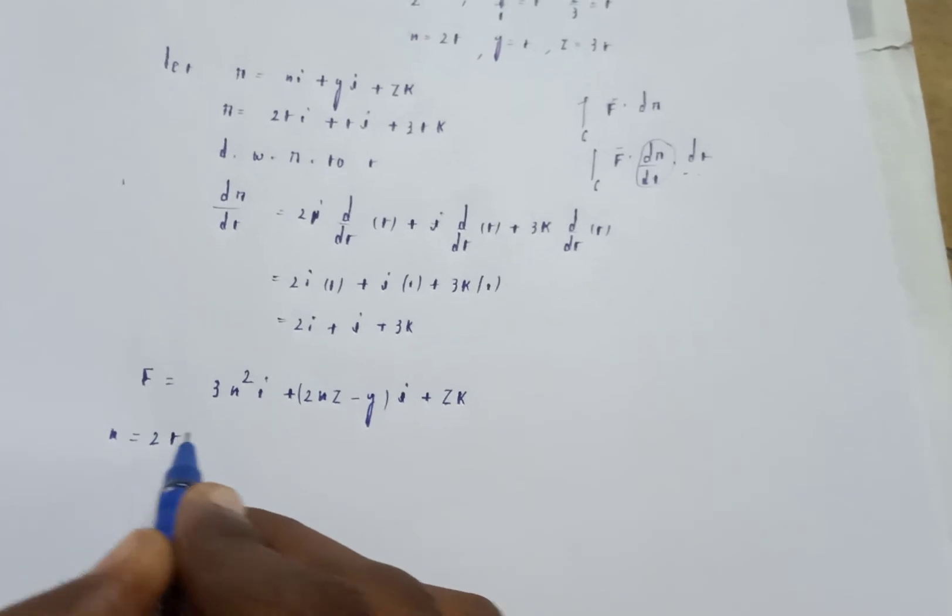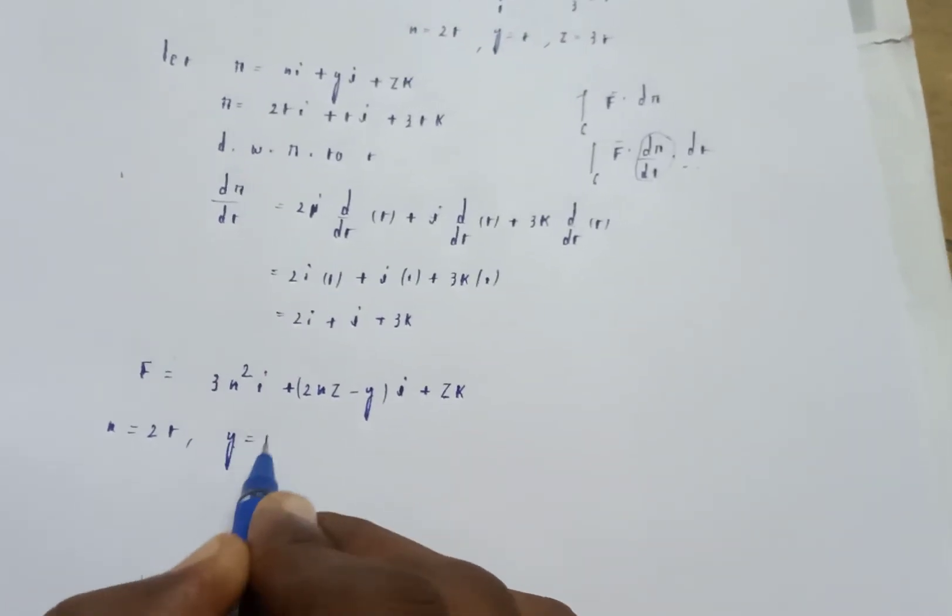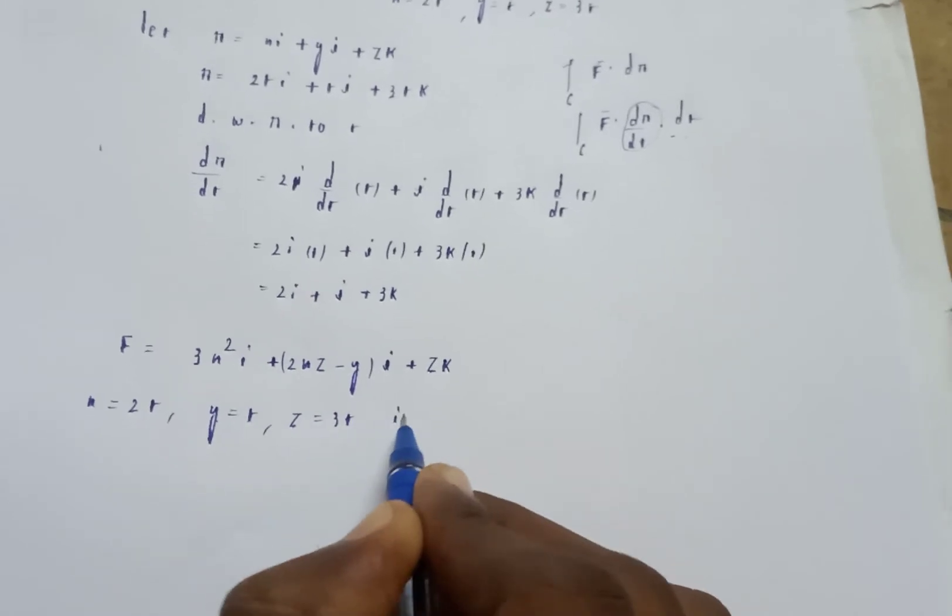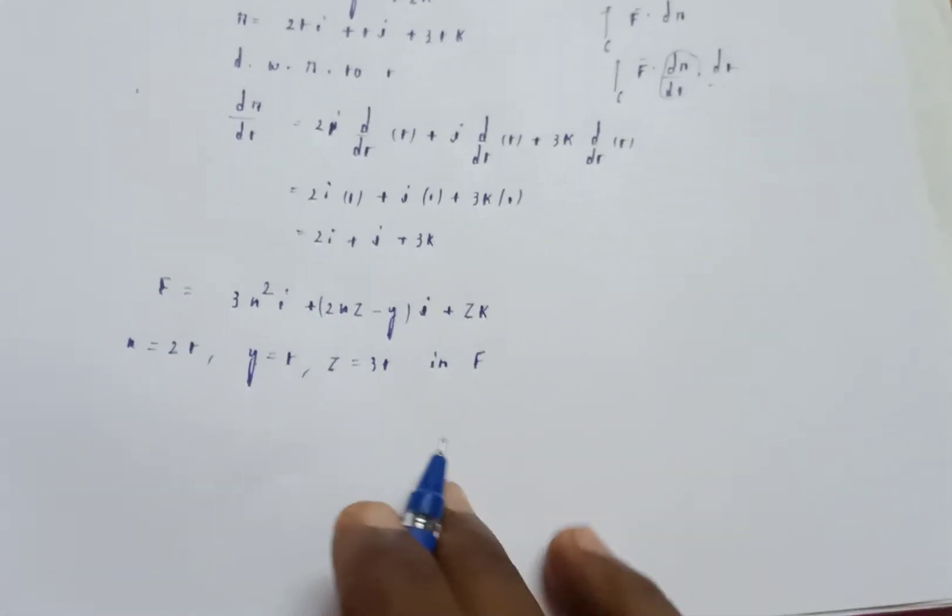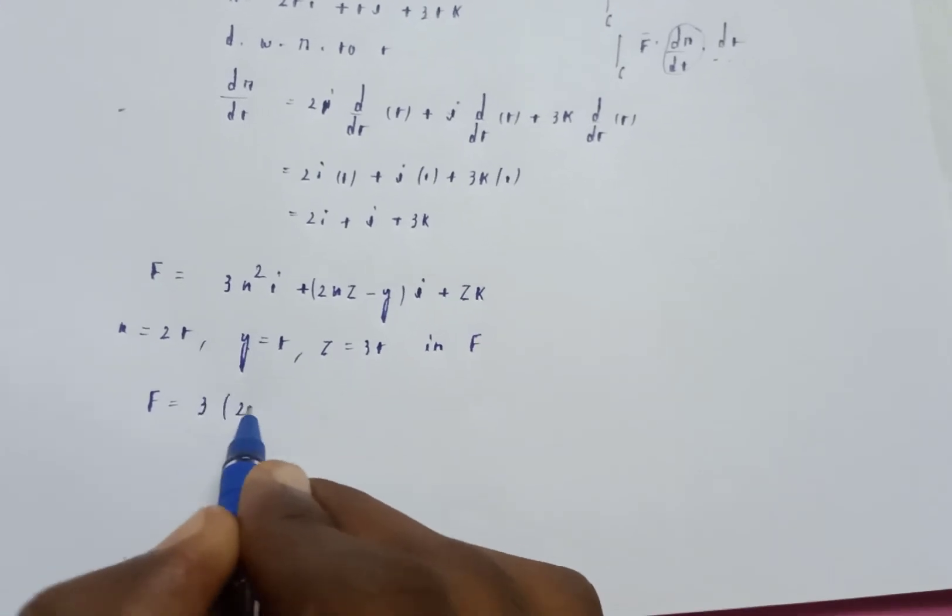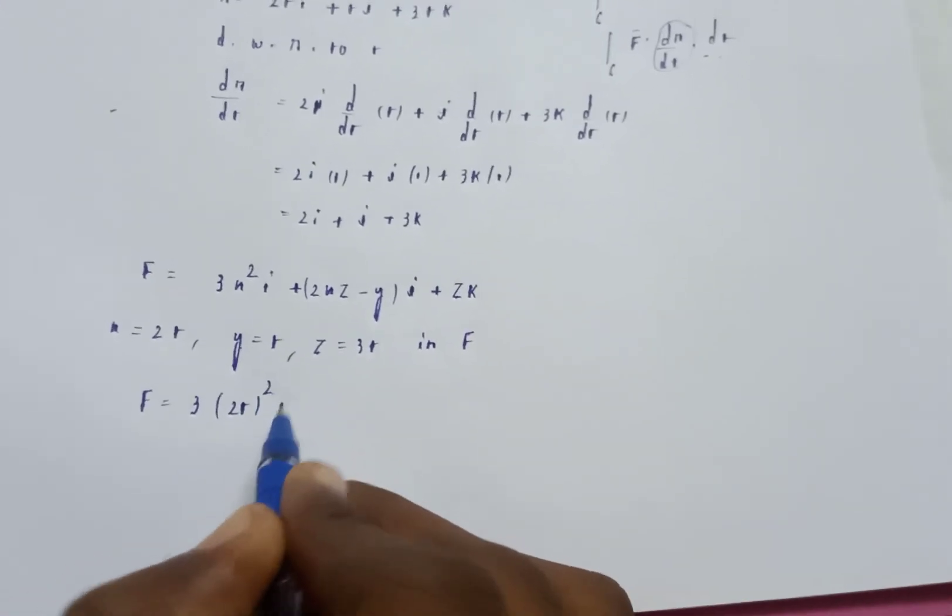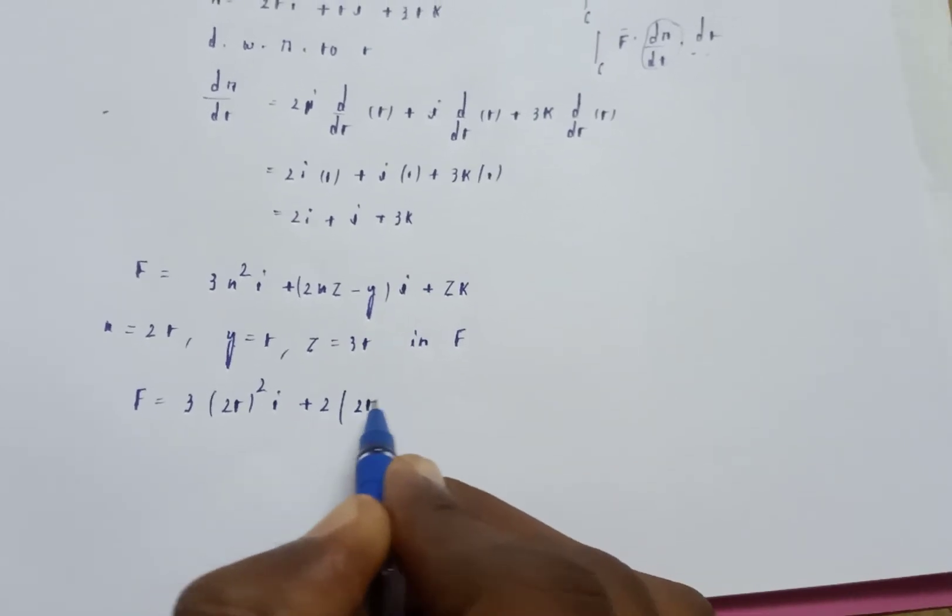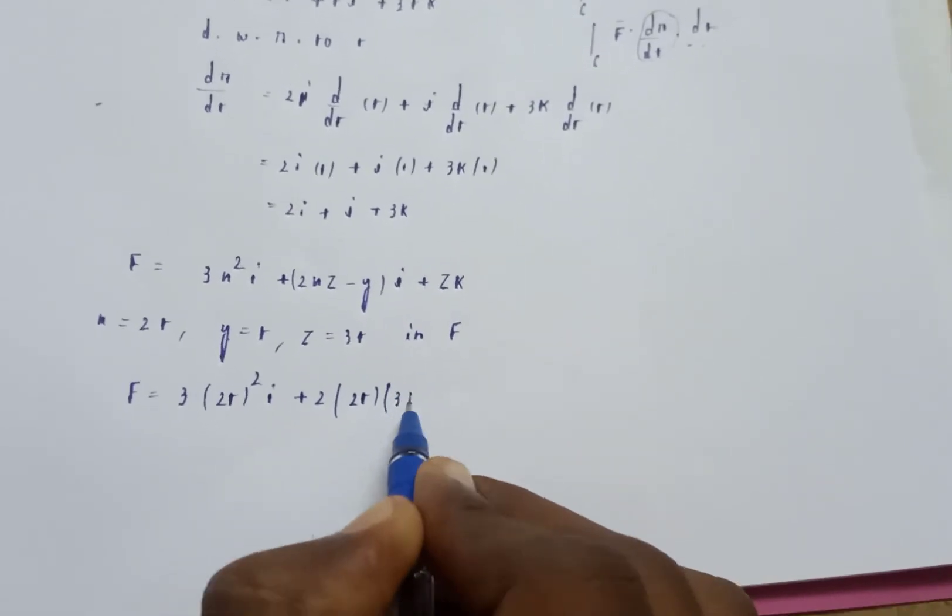Substituting x, y, z values: x is equal to 2t, y is equal to t, z is equal to 3t. So F equals 3(2t) whole square i plus (2 times 2t times 3t minus t) j